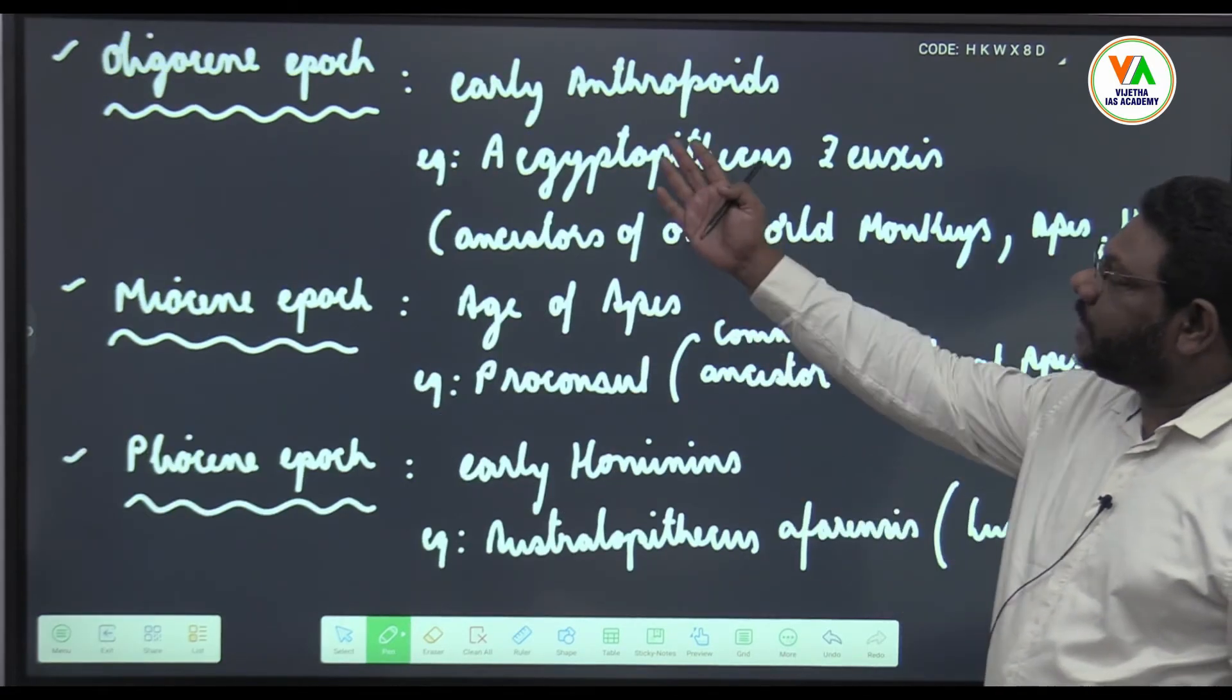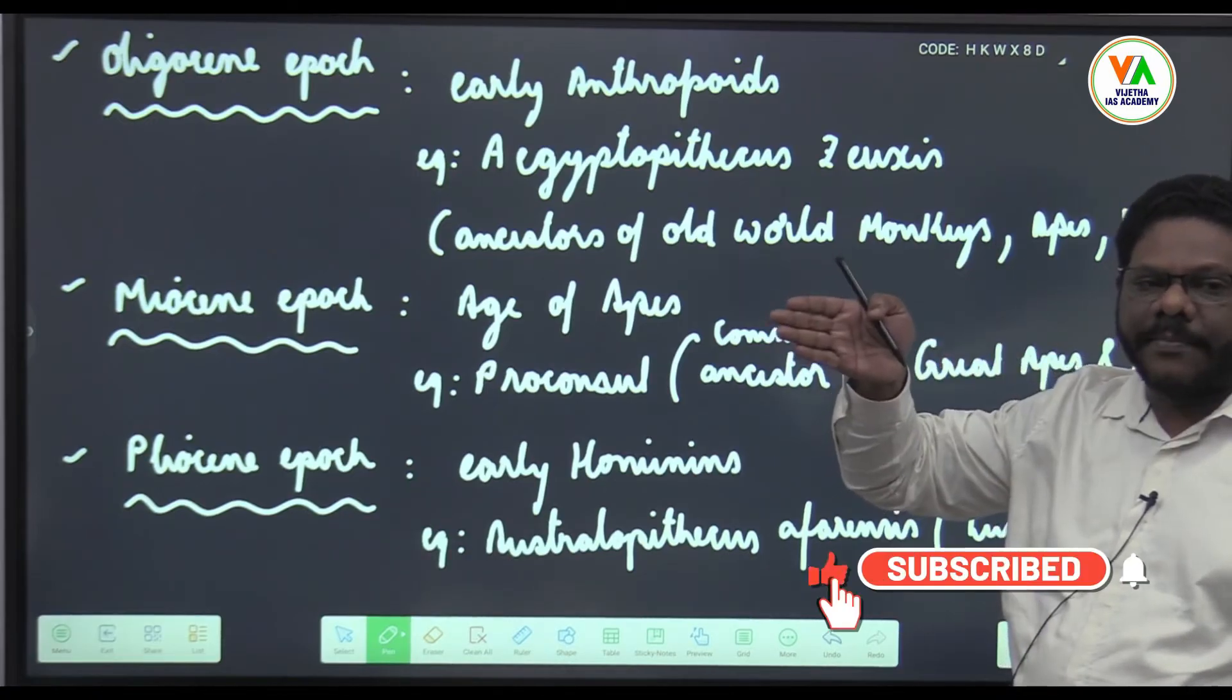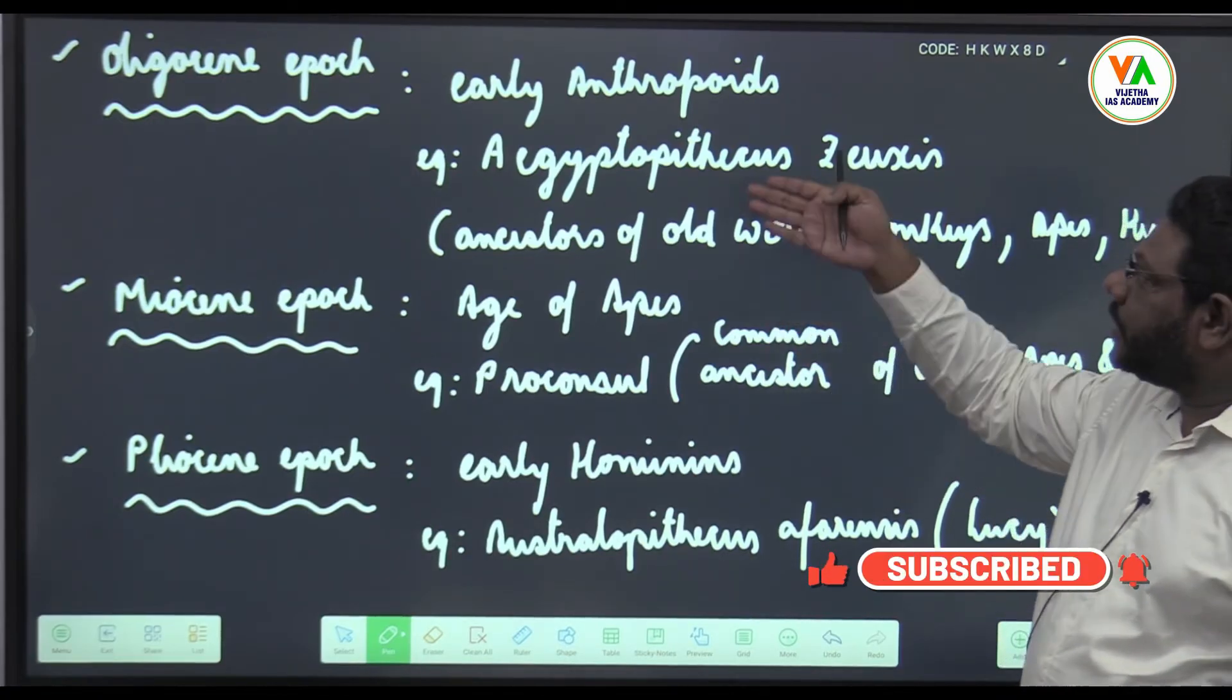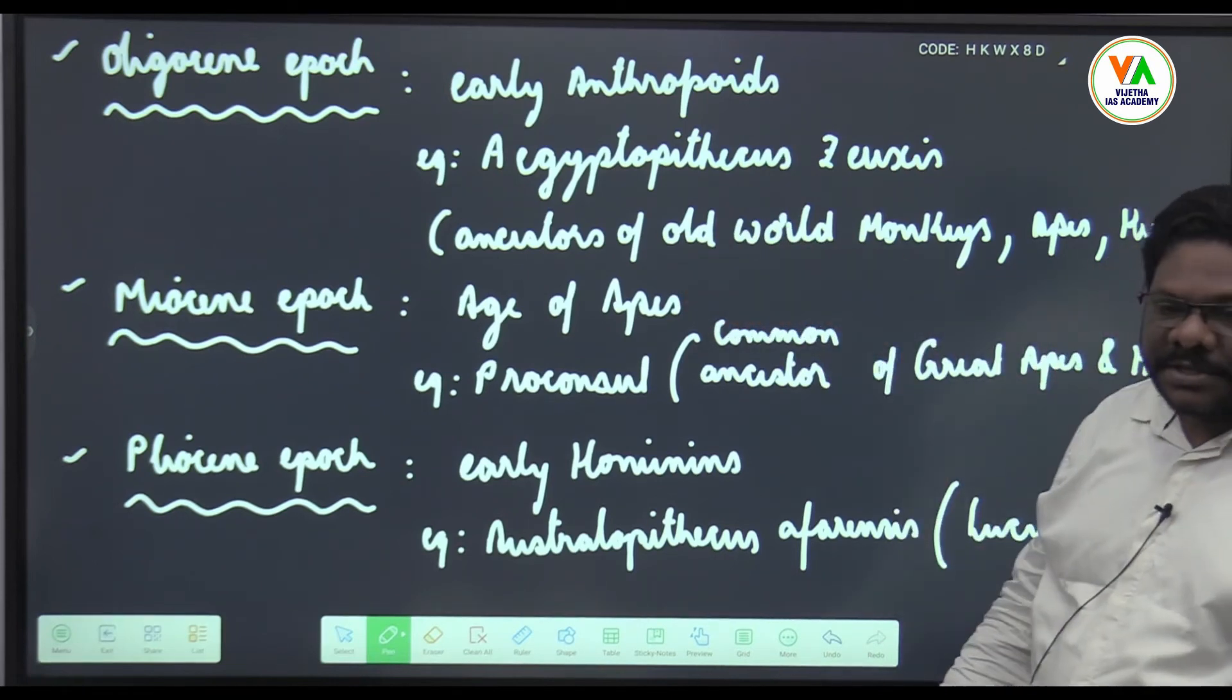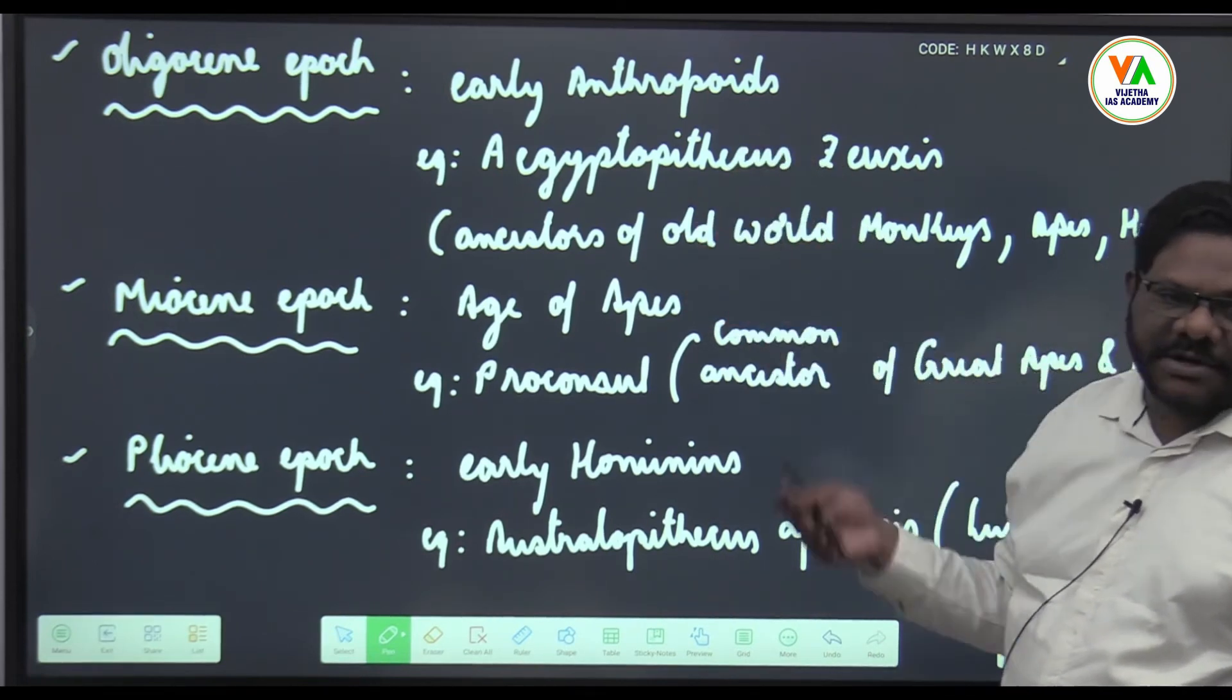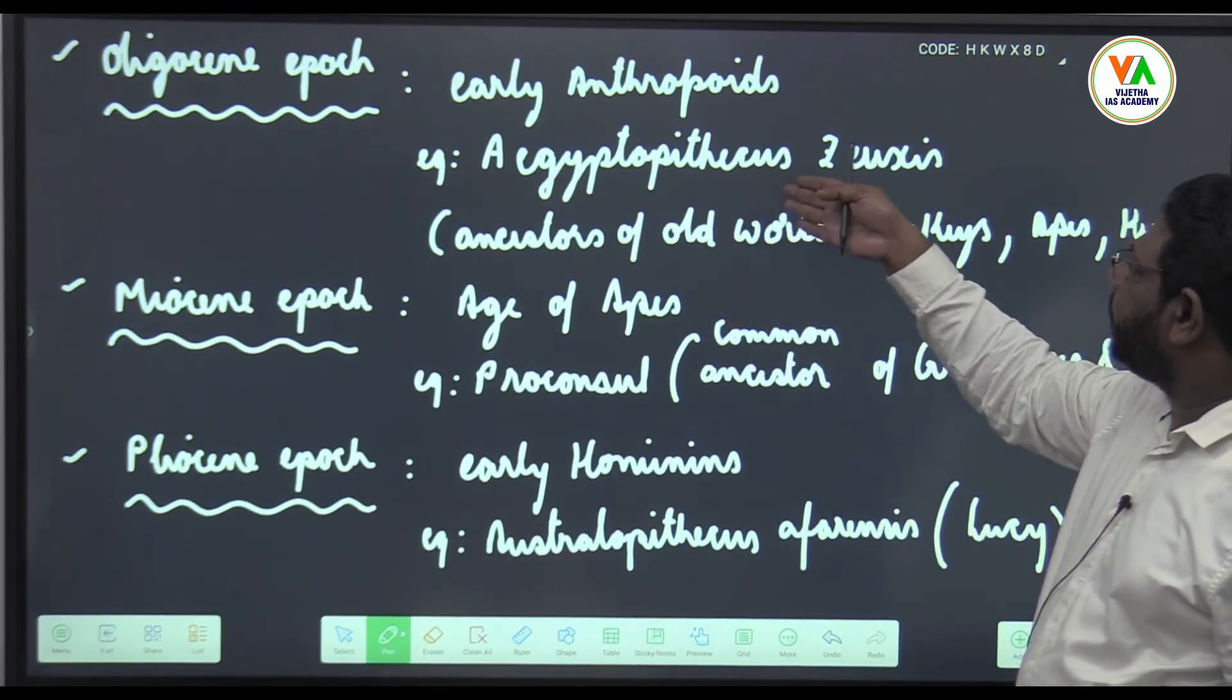Then you have Oligocene, early anthropoids. Yesterday I have seen Prosimians, Anthropoidea. In anthropoids which are old world monkeys, apes and humans, these are considered to be the ancestors of these forms, which is Aegyptopithecus zeuxis.